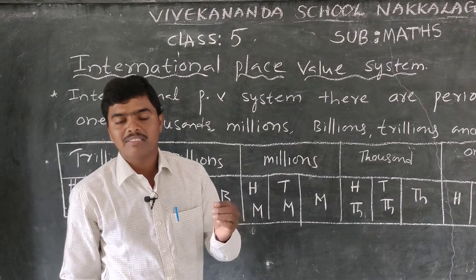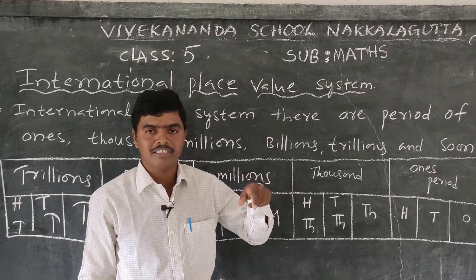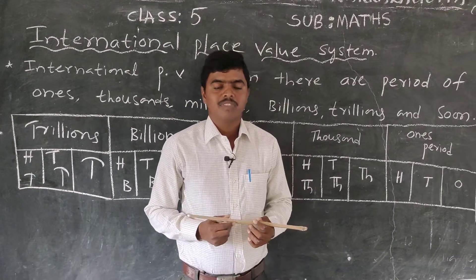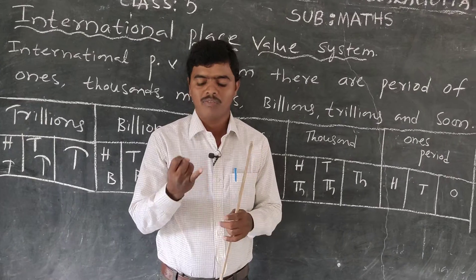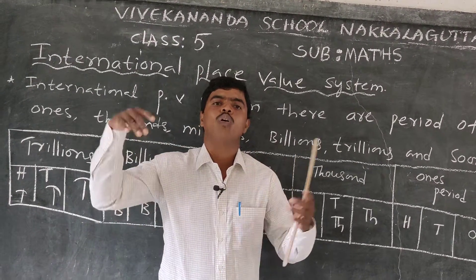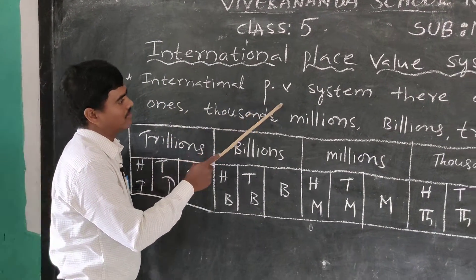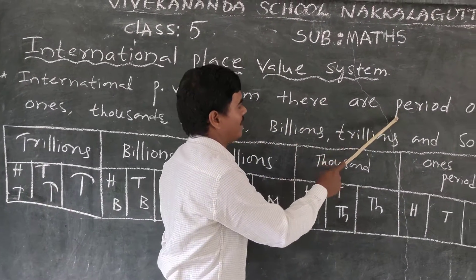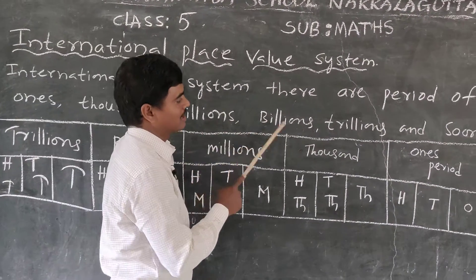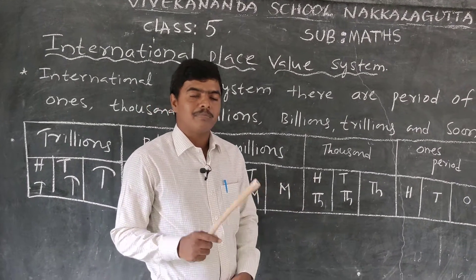The international place value system is used by all other countries, while the Indian system is used only in India. In the international system, there are periods: ones, thousands, millions, billions, trillions, and so on. In the international place value system, the periods are: ones, thousands, millions, billions, and trillions.